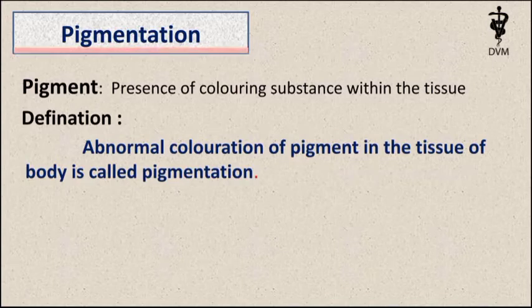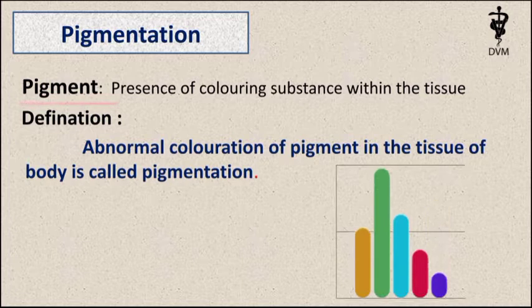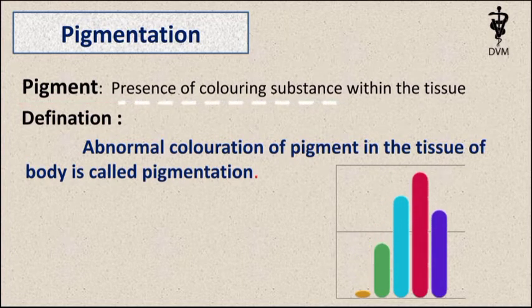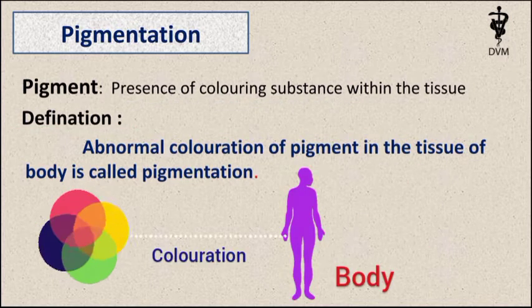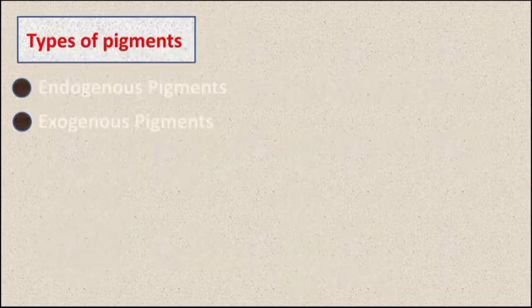What is pigmentation in tissues of the body? As we know, a pigment is the presence of coloring substance within the tissue. Pigmentation can be defined as abnormal coloration of pigment in the tissues of the body.